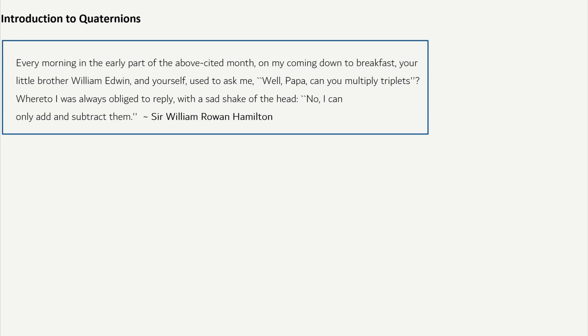So first, we're going to start with a quote. There are so many interesting, funny, dramatic quotes about math and through math. So this is a letter that Sir William Rowan Hamilton was writing to one of his children. And by the way, Hamilton is the one who discovered quaternions. So every morning in the early part of the above cited month on my coming down to breakfast, your little brother William Edwin and yourself used to ask me, Well Papa, can you multiply triplets? Whereto I was always obliged to reply with a sad shake of the head, No, I can only add and subtract them.